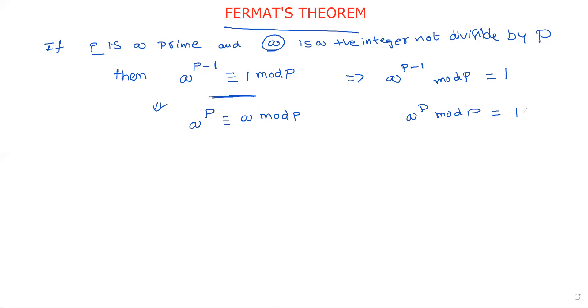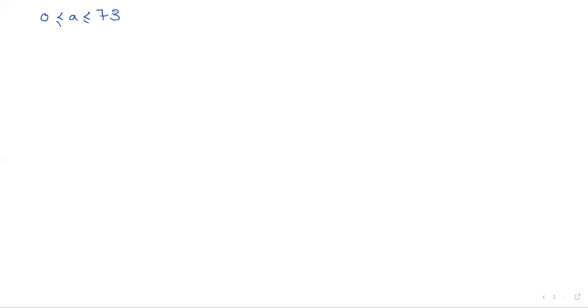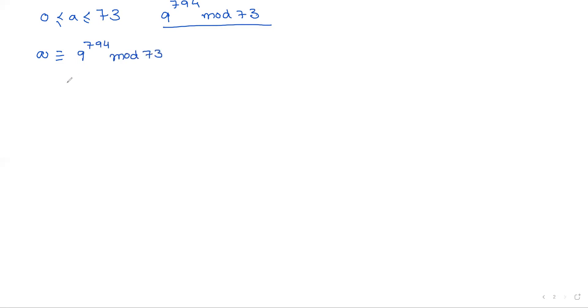Now we will consider some examples. Find a where 0 ≤ a ≤ 73, with a ≡ 9^794 (mod 73). You have to solve this problem. The first step is to convert 794 in terms of 73, to make the formula a^(p-1) ≡ 1 (mod p).